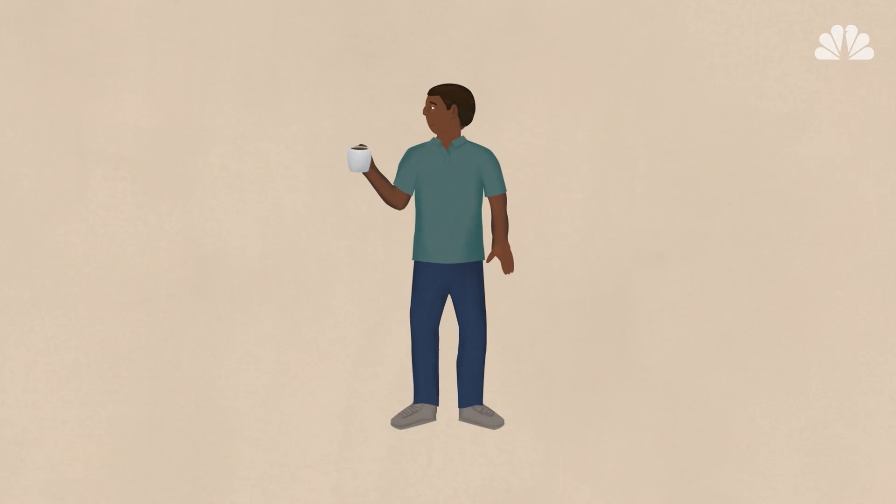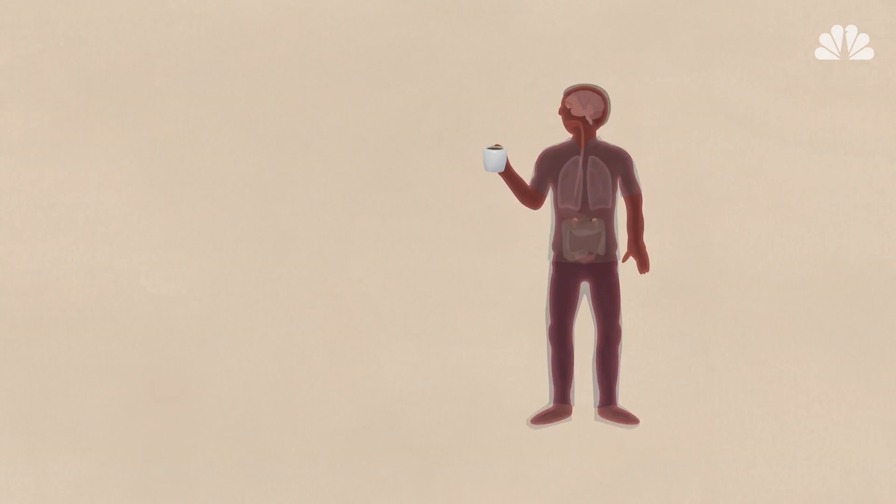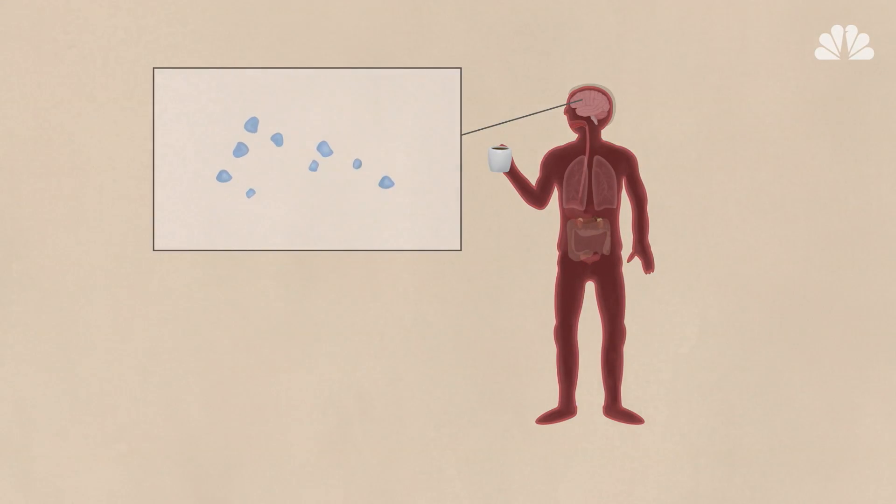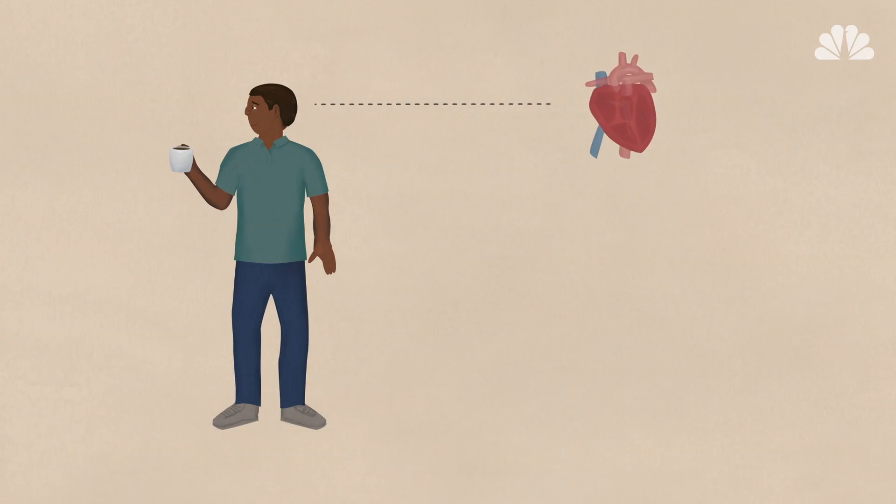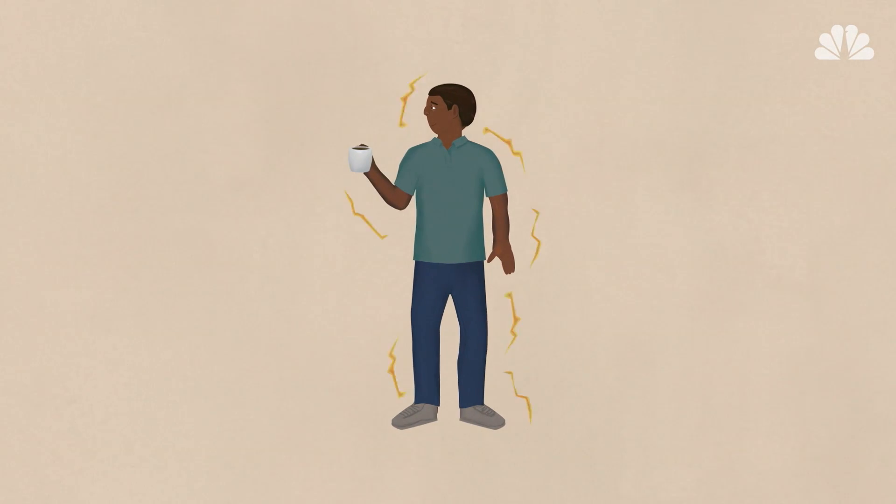That coffee-fueled change to the adenosine process kicks off a chain reaction affecting other neurochemicals too. When it's blocked from binding to receptors, adenosine floats around in the brain, causing the adrenal gland to release adrenaline. The adrenaline signals your body to make changes like speeding up your heart rate, increasing the feeling of energy, alertness, and even muscle strength. These same effects can give you the java jitters too.